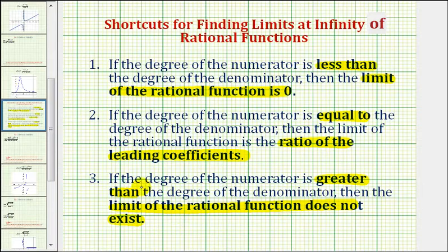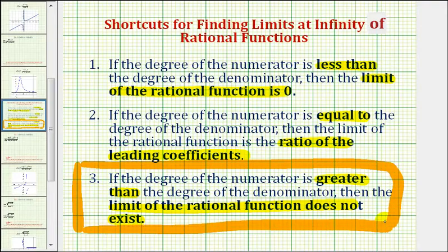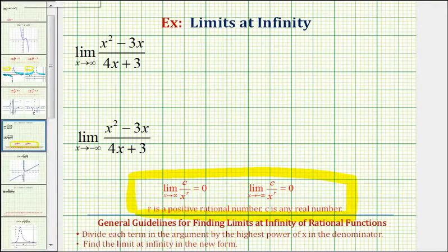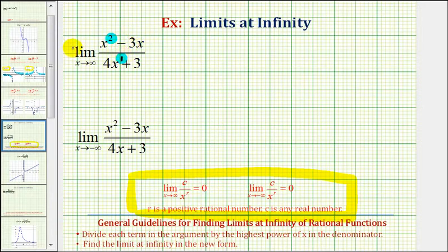For this video, our two limits are going to fall into this last category. Notice how the degree of the numerator is two and the degree of the denominator is one. Therefore, since the degree of the numerator is greater than the degree of the denominator, this limit is not going to exist, meaning it will approach positive or negative infinity.